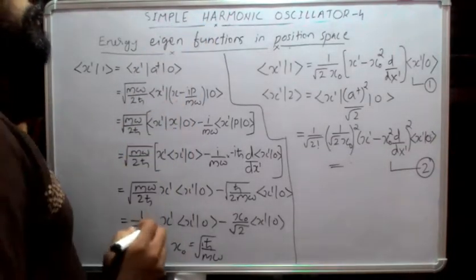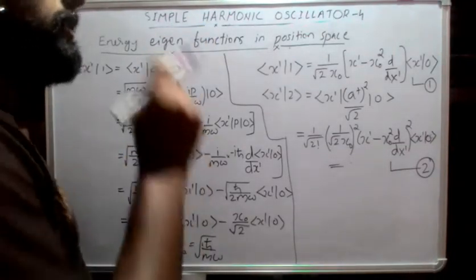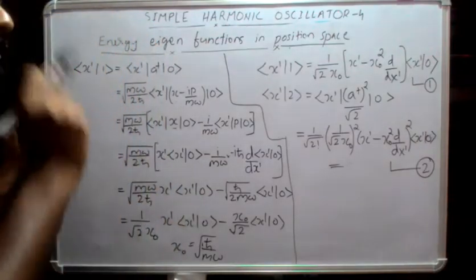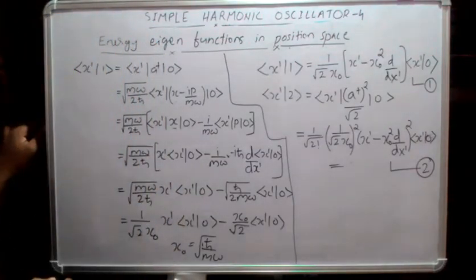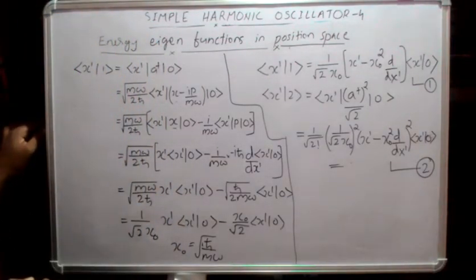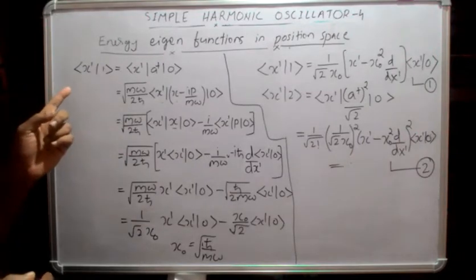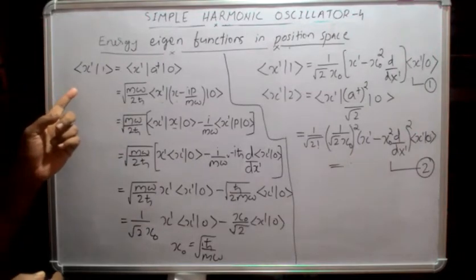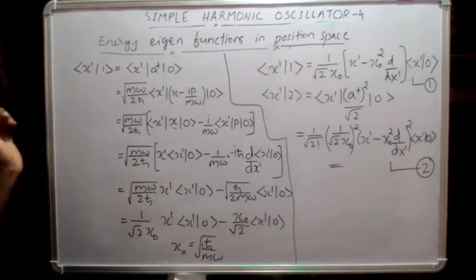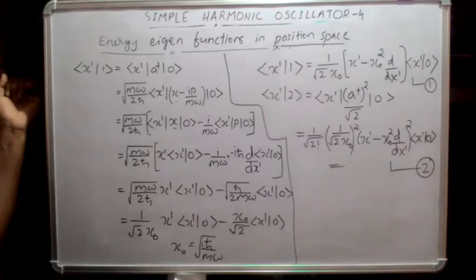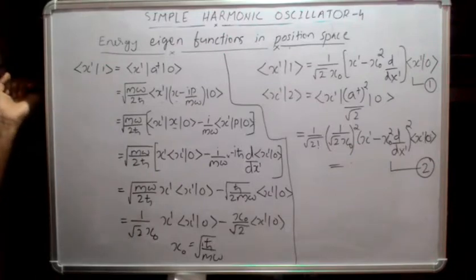This is the fourth class on the simple harmonic oscillator. I hope you have gone through the previous three classes. In the last class we derived the ground state energy eigenfunction of the simple harmonic oscillator.